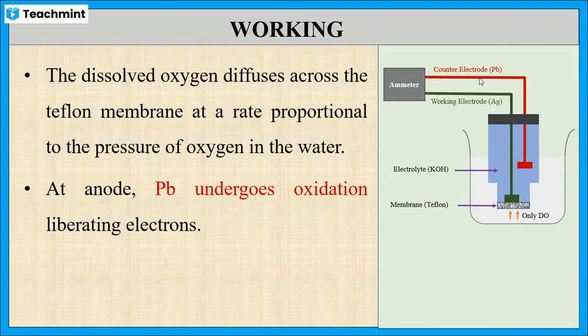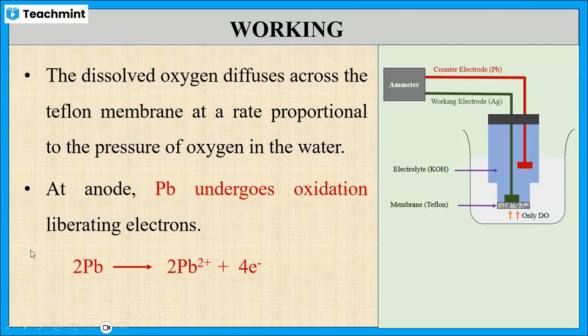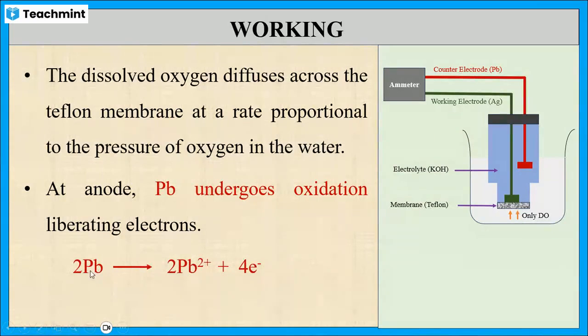At anode, lead undergoes oxidation by liberating electrons. This is the equation. So at anode, lead is converted into its ionic forms with the liberation of electrons.